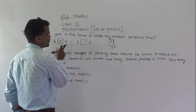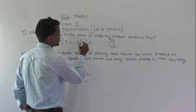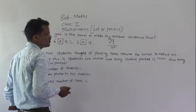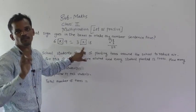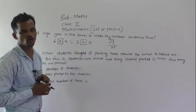Here 6 nines are 54 and here also 3 into 18 is equal to 54, means in the box, empty box, multiplication sign will come.